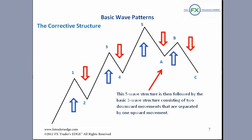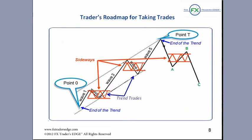This is the Trader's Roadmap for Taking Trades. We have the starting point zero and the ending point T, and we discussed the wave personalities. Each wave in the cycle has a distinct personality driven by trader's emotions. This is the Elliott Wave Roadmap — the cycle: five waves up and three waves down. Each wave in the cycle calls for a specific trading strategy.